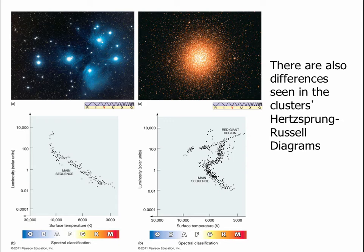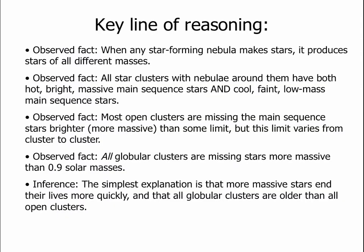So why do these Hertzsprung-Russell diagrams look so different for the two types of star clusters? It's an observed fact that when a star-forming nebula makes stars, it produces stars of all different masses. In the Orion Nebula you see very massive stars, stars about the mass of the Sun, and stars of much lower mass. It's also observed that all star clusters with a nebula have both hot, bright, massive main sequence stars and cool, faint, low-mass main sequence stars.